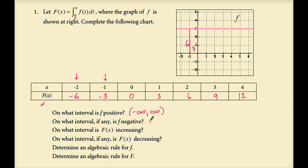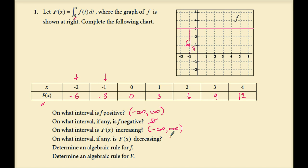F is never negative — it never drops below the x-axis. Uppercase F of x is increasing on its entire domain as well, from negative infinity to positive infinity. Since lowercase f is the slope function of uppercase F and it's completely positive, uppercase F is increasing everywhere. It's not decreasing, because the slope function is completely positive.